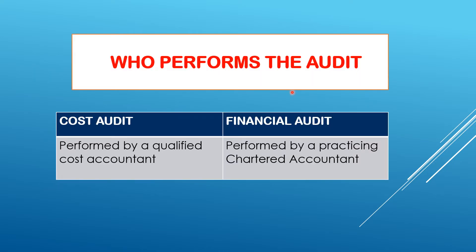The second difference is who performs these audits. Cost audit is performed by a qualified cost accountant. He has to be well versed in all cost accounting techniques and records. The financial auditor, on the other hand, has to be a qualified, practicing chartered accountant. Only then can he perform the financial audit.